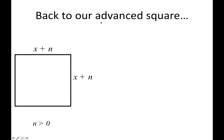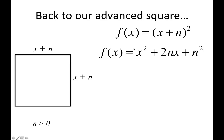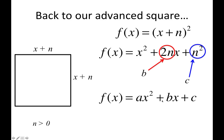To show this, I'm going back to our advanced square (x + n) by (x + n) and expanding it. You'll notice that in standard quadratic form, the b term is 2n and the c term is n². This will always happen with a square — b will always be 2n and c will always be n². You can use this to make a square out of a rectangle: divide the b term by 2 and square it to get c, i.e., (b/2)² = c.